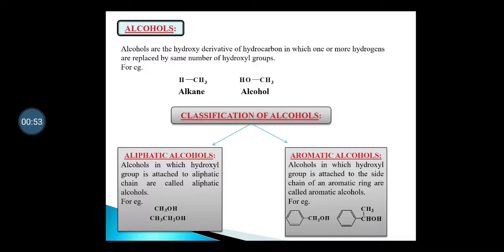As you have already read, one or more hydrogens are replaced by the same number of hydroxyl groups. If you replace one hydrogen with one hydroxyl group, you will get alcohols. Now there is a classification of alcohols. Alcohols are classified as aliphatic alcohols and aromatic alcohols.